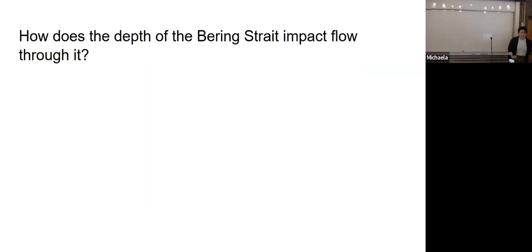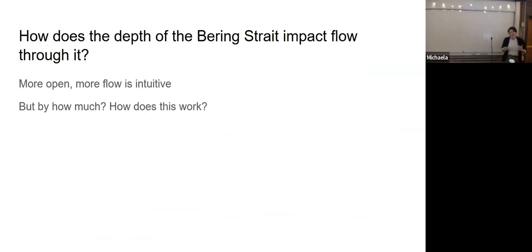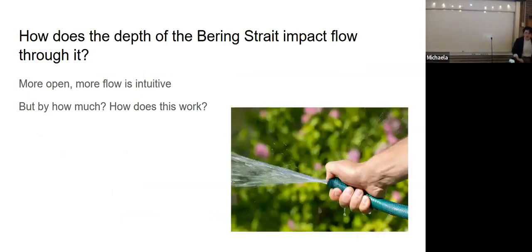This is our question. How does the depth of the Bering Strait impact flow through it? Let's try to use the power of our minds to figure this out. If the Bering Strait is more open, more water is going to get through it. That makes sense. You have a deeper channel, you can get more water through it. But what exactly does that mean? How does this functional relationship work?